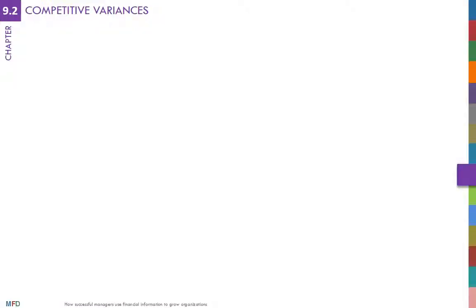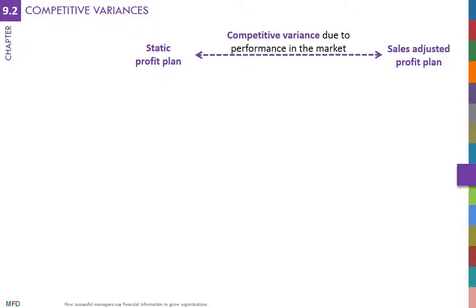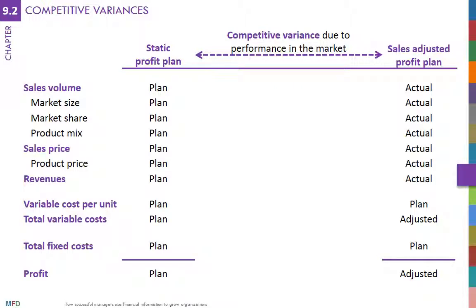Understanding the difference between the expected profits from the original profit plan and adjusted profits estimated using the sales-adjusted profit plan is the first step in analyzing performance. Competitive variance equals profit from the sales-adjusted profit plan minus profit from the original profit plan. Various factors account for the difference.